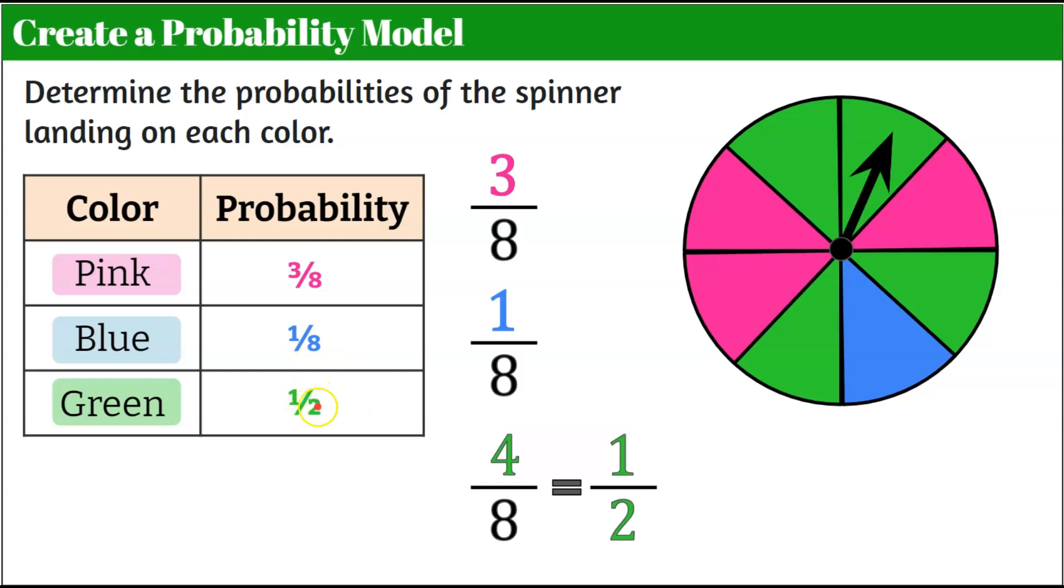If we left this as four-eighths we can compare them more easily and we know that it's more likely that we'll get green. The next one that would be likely would be pink and blue is the least likely. So we can see that it's easy to compare using a probability model.